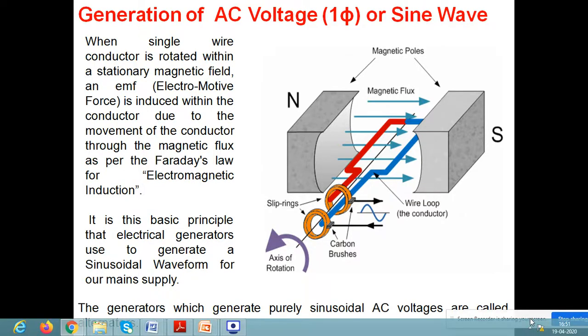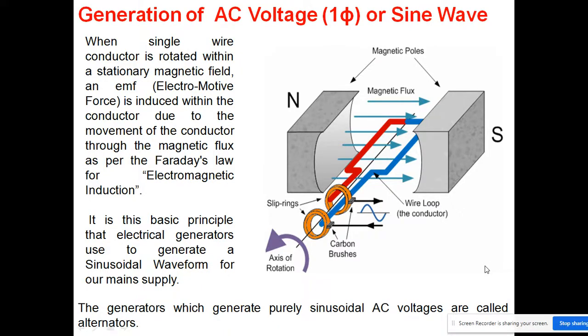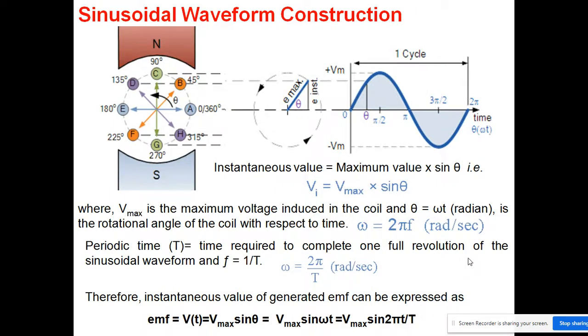If we are talking about purely sinusoidal AC voltage, that type of voltage is generated by alternators. So when we refer to purely sinusoidal AC voltage, we call the machine an alternator. You can see in this diagram how we construct our AC sinusoidal waveform.